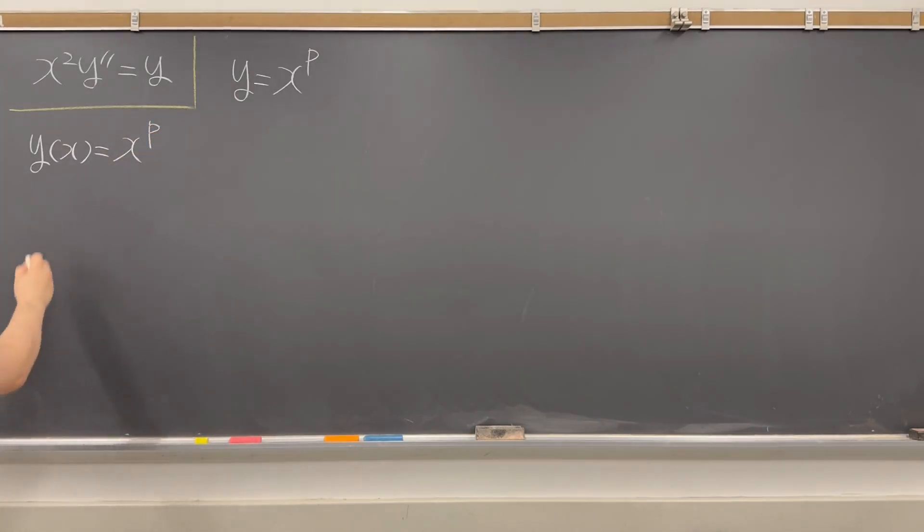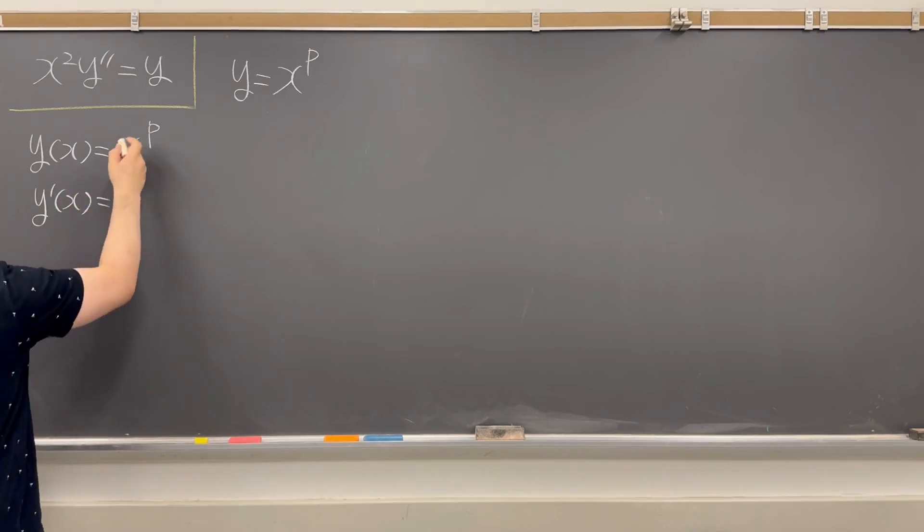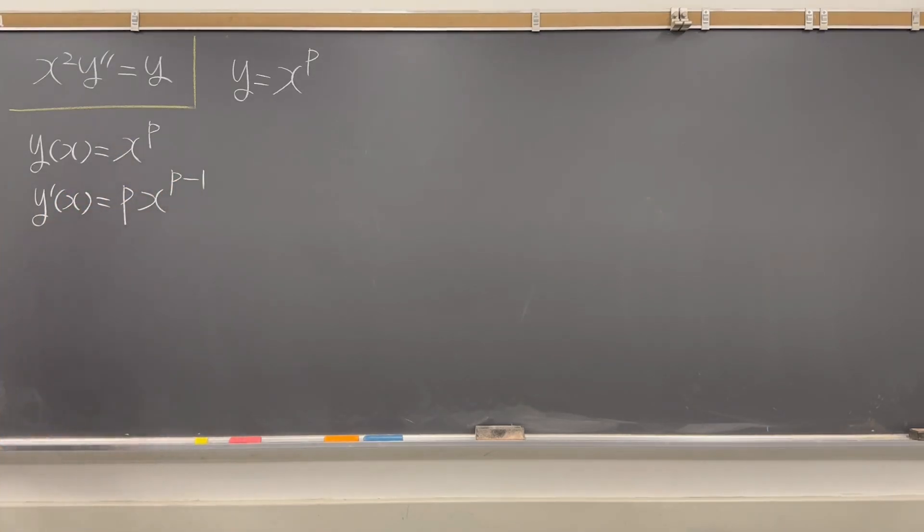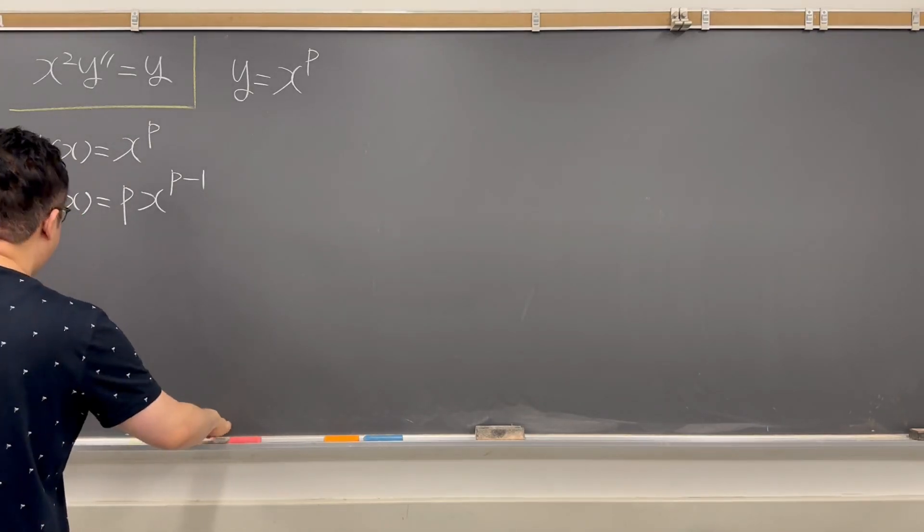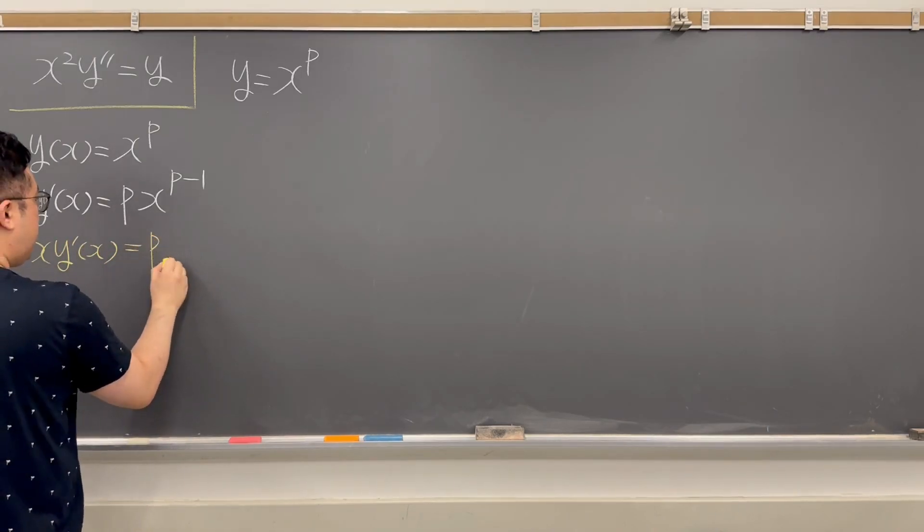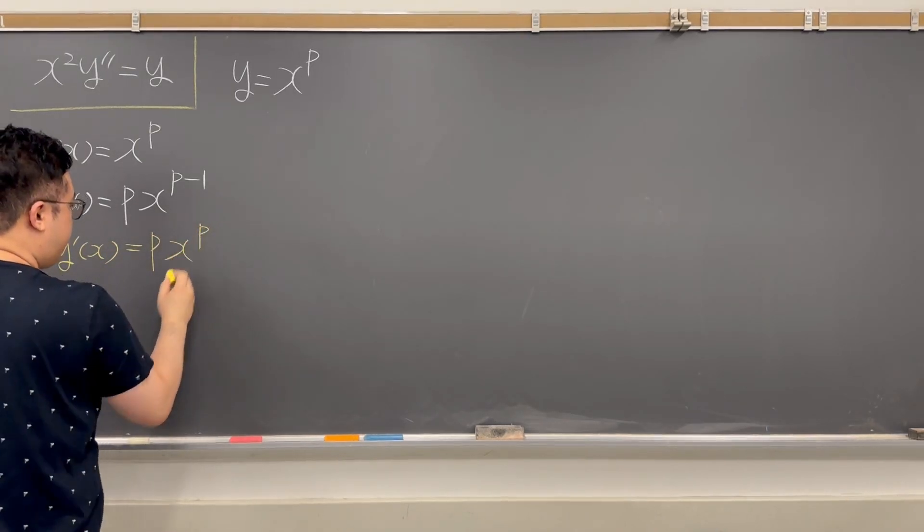Then the property is now y prime x is now p times x to the power of p minus 1, which means if you multiply x on the left and right-hand side, then we will have x times y prime x. It's the same as p times x to the power of p.